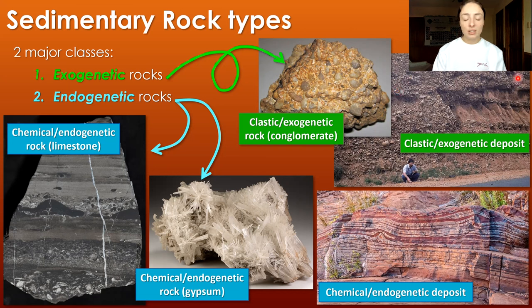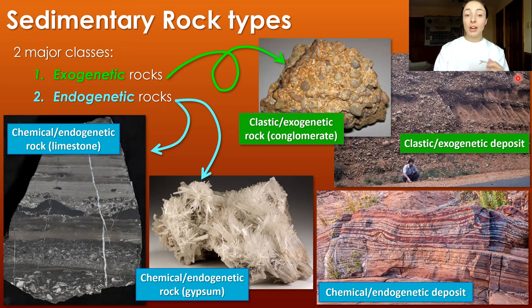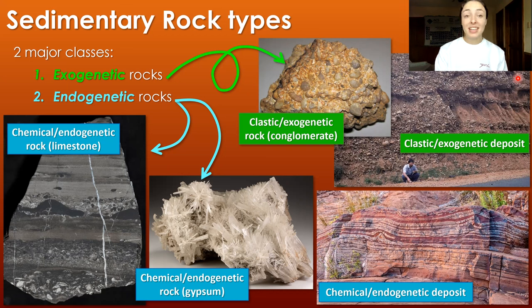Detrital and clastic are similar terms. But clastic isn't necessarily ideal in all cases, because when we're talking about other types of rocks like igneous rocks, they can contain clasts but not be clastic or exogenetic. So it's a little bit of a confusing term.